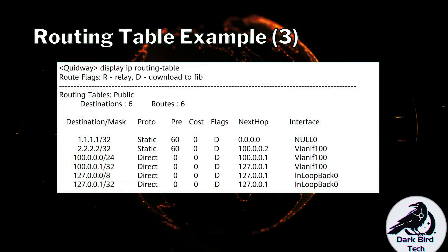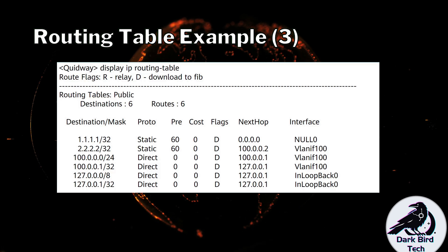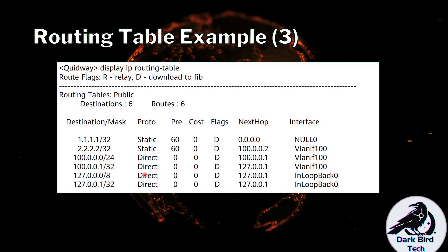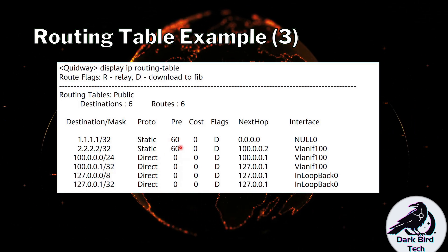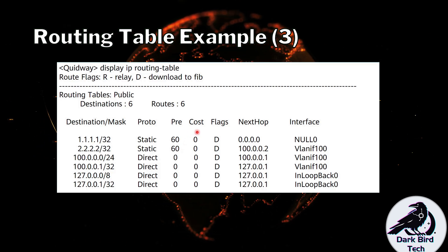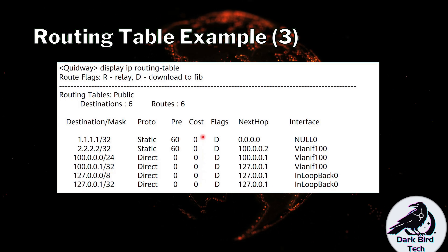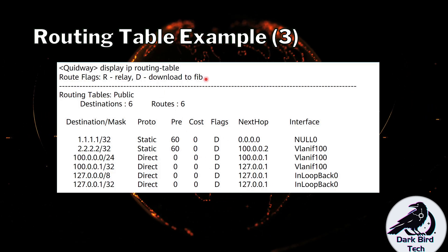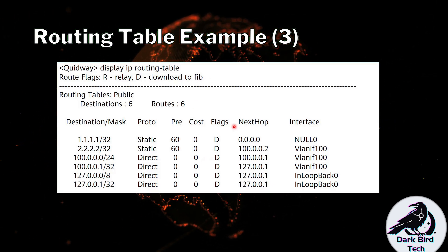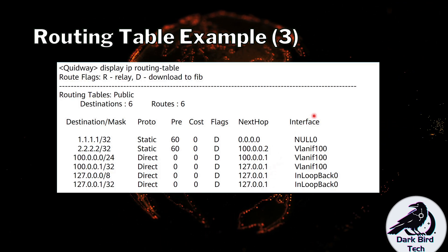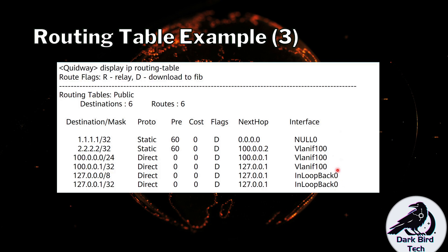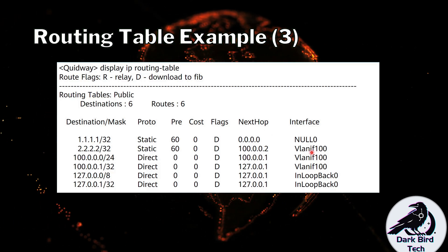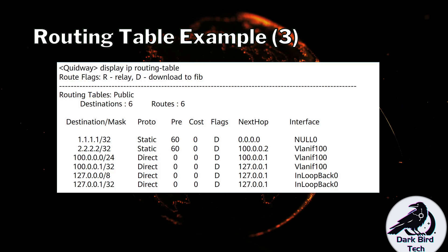For a third example, here is a routing table from Huawei, which presents it more like a table. It shows destination network addresses and their masks, the protocol used to learn it — static and direct in this case — and the preference values Huawei uses: direct is 0 and static is 60. Cost columns are all zeros since they're all static or directly connected. Flag bits indicate the route is in use; D means downloaded to the forwarding information base. The next hop IP and exit interfaces are also listed. This screenshot comes from a Layer 3 switch, which is why VLAN interfaces appear instead of Gigabit Ethernet.